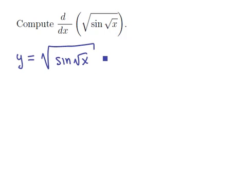Let's prep this function. Using the fact that square roots are powers, we're going to have the sine of the expression x to the 1 half, and then this whole thing is raised to the 1 half power. So we have the quantity sine of x to the 1 half raised to the 1 half power.